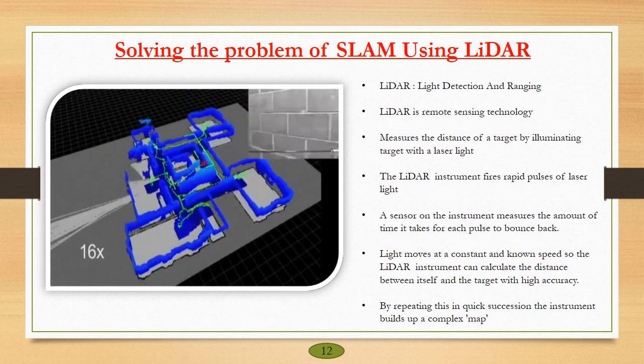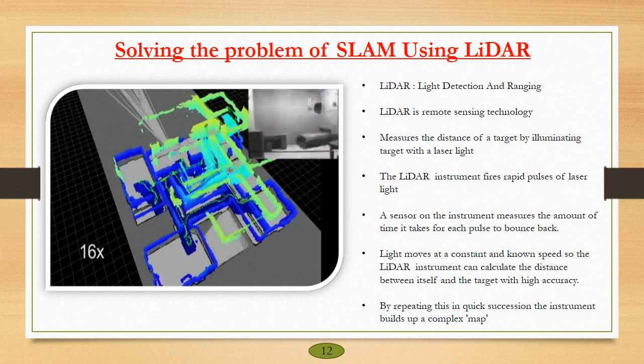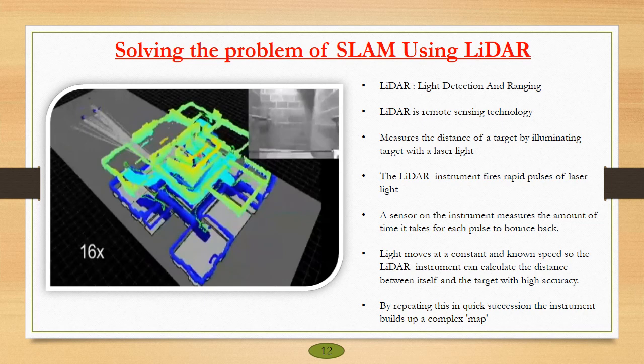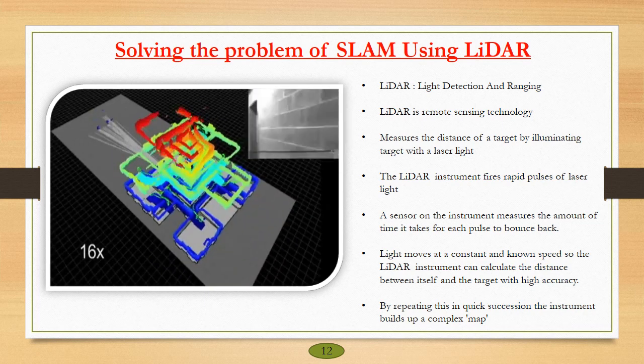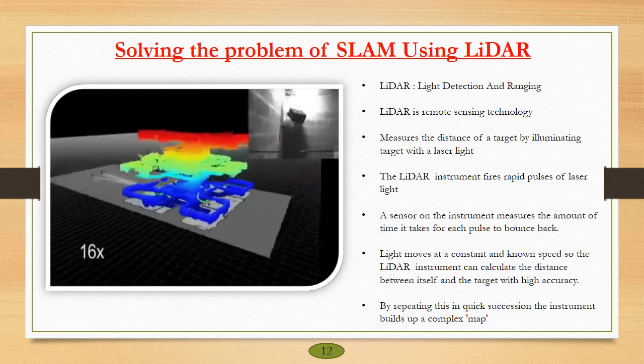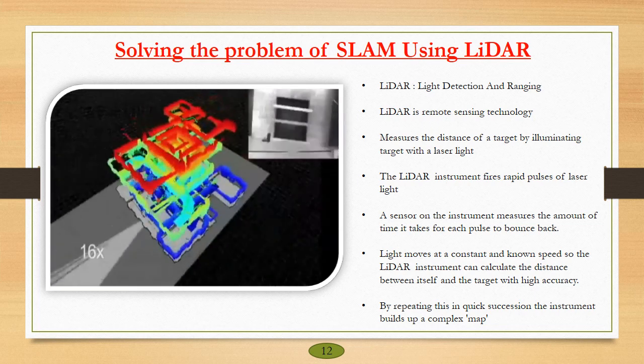LIDAR uses laser light for measuring the distance of target by illuminating the target with laser light. The LIDAR instrument fires rapid pulses of laser light. A sensor on the instrument measures the amount of light which is reflected back from the target, and it will then calculate the time taken for each pulse to bounce back.